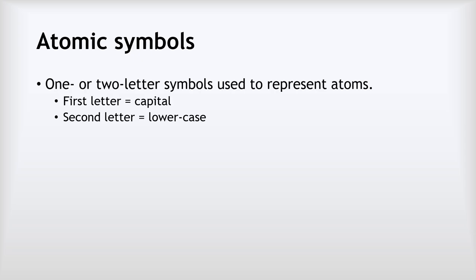Let's start with atomic symbols. An atomic symbol is a one or two letter symbol used to represent an atom. It's really important that we write them correctly. The first letter must always be a capital. The second letter, if there is one, must be lowercase.